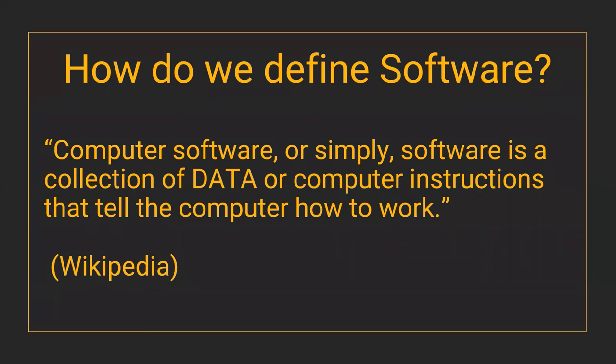The reason why it was important to think about what software is, is so you can think about what it's good at and what it's not good at. All it is, is instructions that somebody thought to write that it'll go do — if you push the right button, it does this; if you push another few buttons, it does that. That's important because it means it remembers everything you tell it ever, and it understands absolutely none of it. There's no such thing as meaning to any kind of software — and that includes AI.